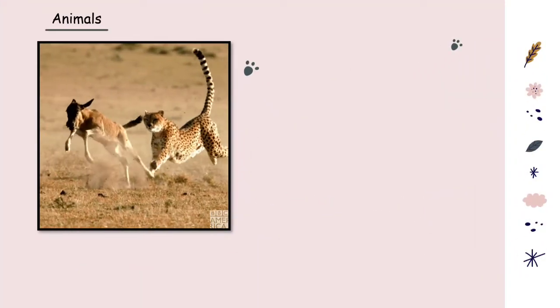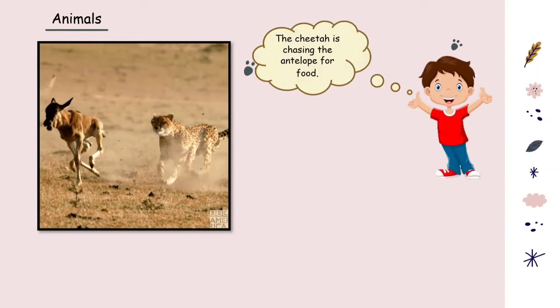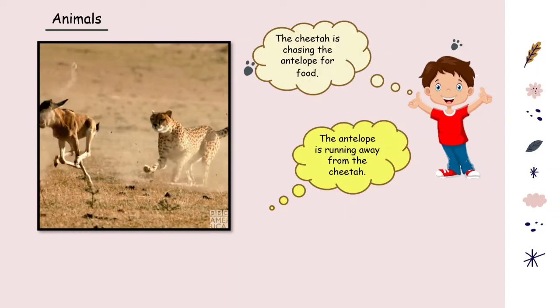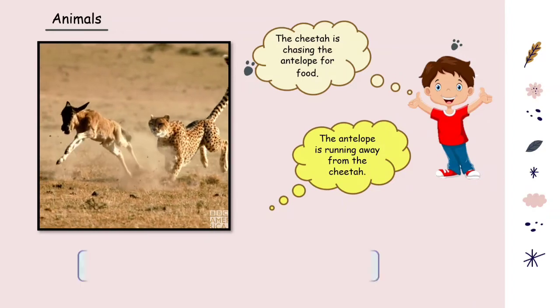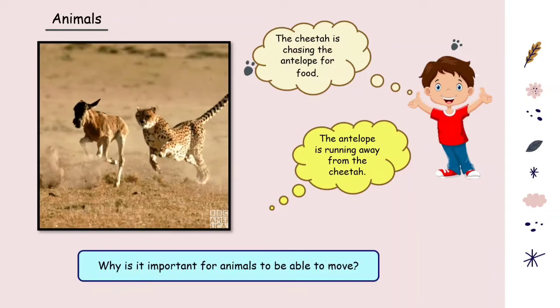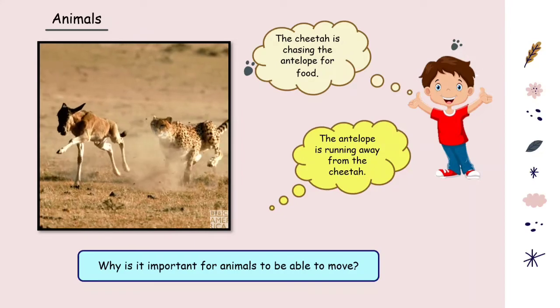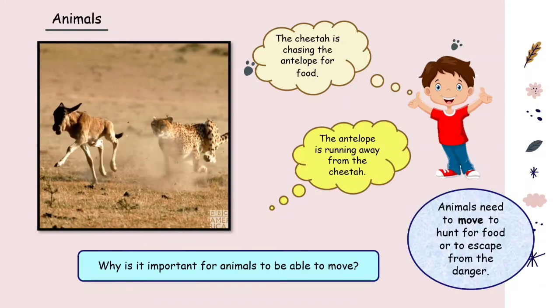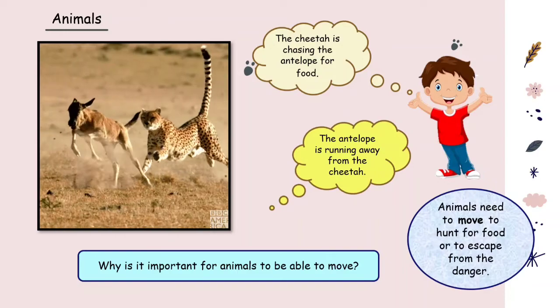Now let's talk about these animals. The cheetah is chasing the antelope for food, and the antelope is running away from the cheetah. So do you know what is important for animals to be able to move? Yes, correctly. Animals need to move to hunt for food or to escape from danger.